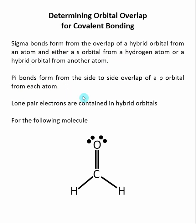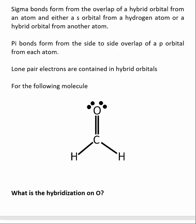In all cases, pi bonds are made by the overlap of p orbitals. Lastly, lone pair electrons are contained in hybrid orbitals.